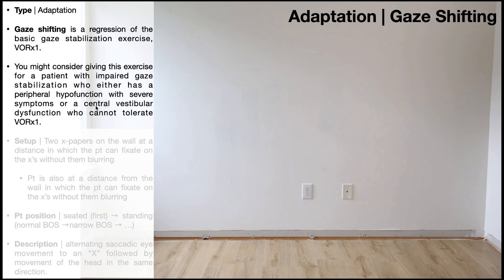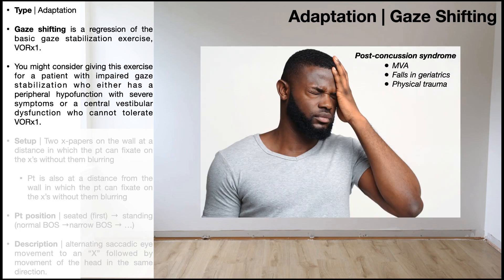Another example would be patients with a central vestibular dysfunction, in particular patients who had a traumatic brain injury and are suffering from post-concussion syndrome. Whether that comes from a motor vehicle accident, falls in the geriatric population, or other kinds of physical trauma, individuals with post-concussion syndrome often have impaired gaze stabilization. But because of the severity they might have with their symptoms, they may not tolerate the VOR times one, so you might also consider giving gaze shifting.